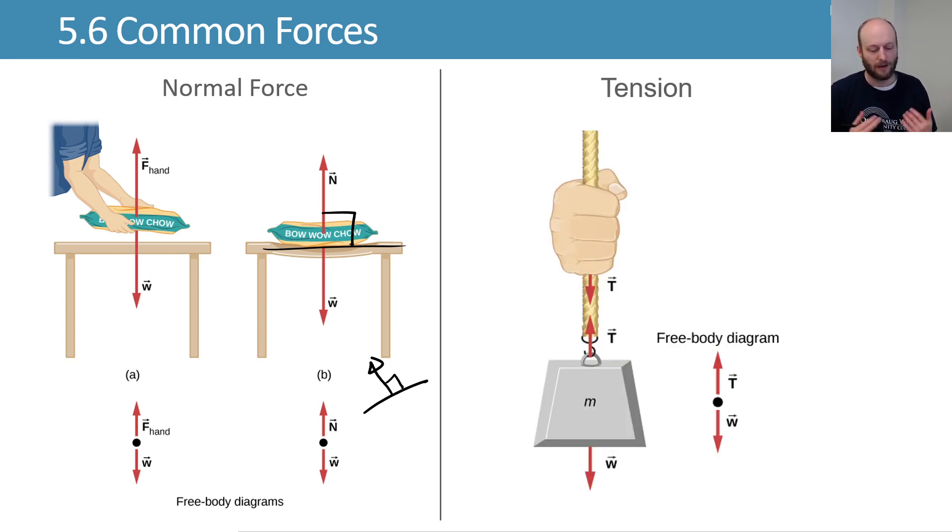Another force is tension. If you have a rope, a string, a cable, you'll have a tension that can be exerted in there. Here we have a weight hanging from a cable. And this is demonstrating that we have a mass with the weight acting down on it, and you have to have some tension acting up on it to hold it there stationary. And that tension is transmitted throughout the cable.